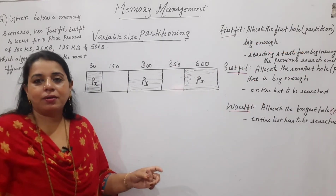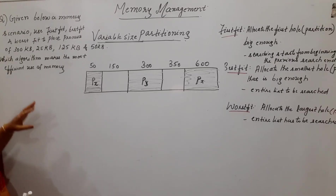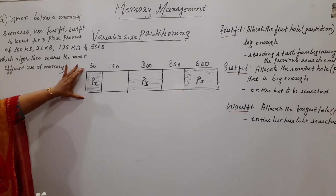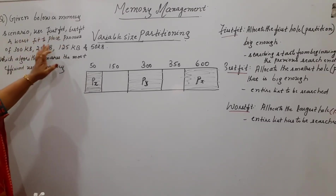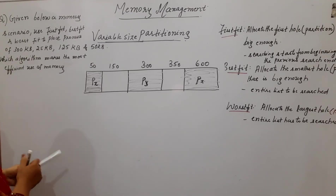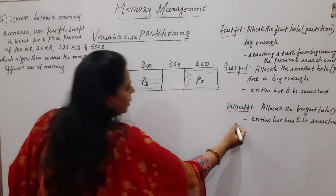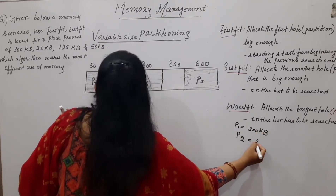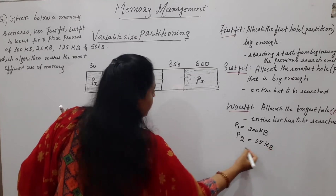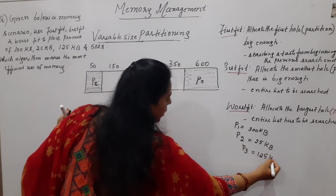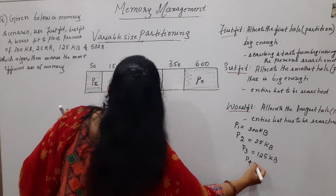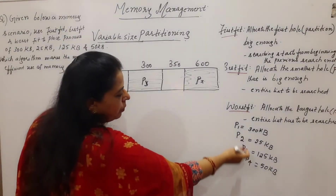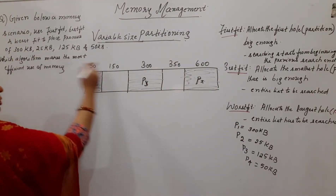A numerical can be asked for 6 to 7 marks, or sometimes 7 to 8 marks also. The problem statement will be like this: given below a memory scenario, use the first fit, best fit, and worst fit to place processes. They have given here some processes: first process P1 is of 300 KB, second process P2 is of 25 KB, third process P3 is of 125 KB, and fourth process P4 is of 50 KB.